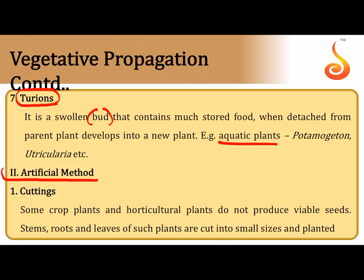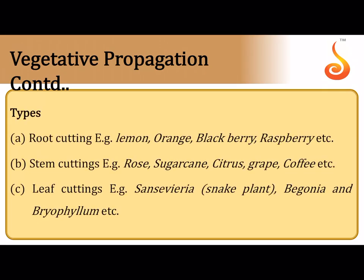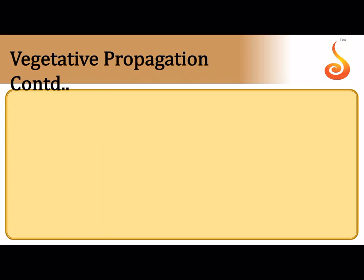Artificial vegetative propagation is carried out through cutting — root cutting, where a cut part of a root is sown in the soil to get a new plant; stem cutting, where a cut stem grows into a new plant; and leaf cutting, where a part of a leaf with a developed bud is grown in soil to get a new plant.